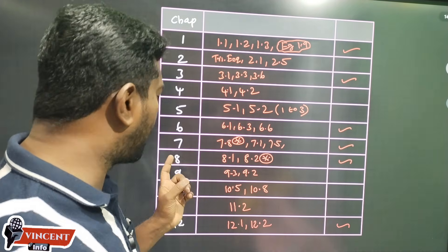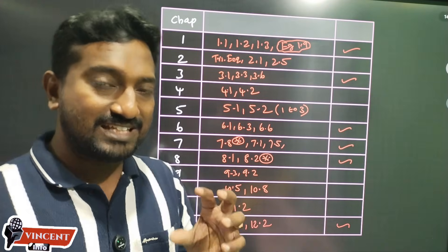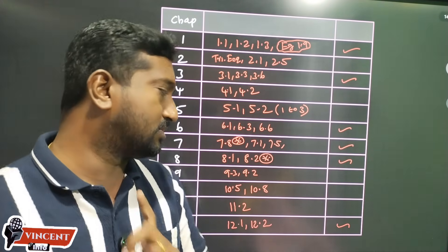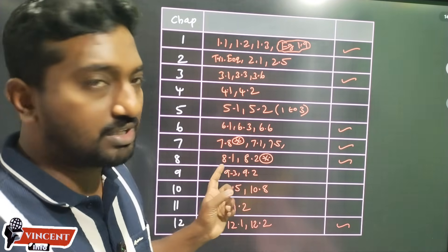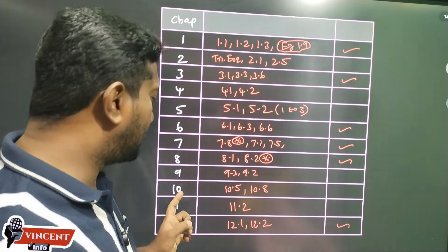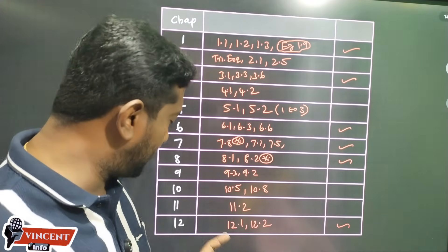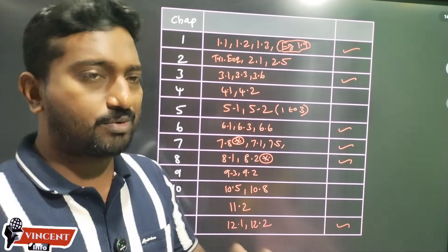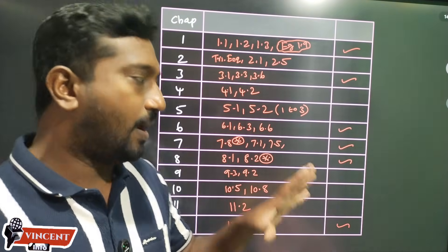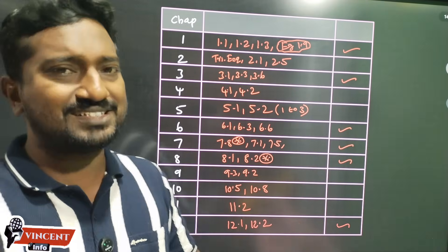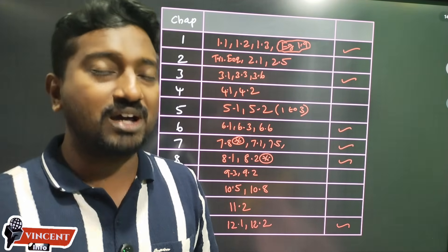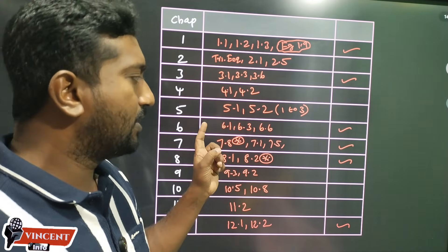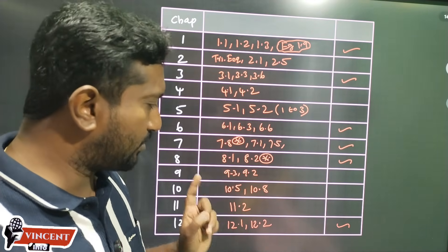In the eighth chapter, we have 8.2 and 8.3. We have 9.3 and 9.2, also 9.5 and 9.8. In the eleventh chapter, we have 11.2. Then we have chapters 12 — twelve chapters in total.